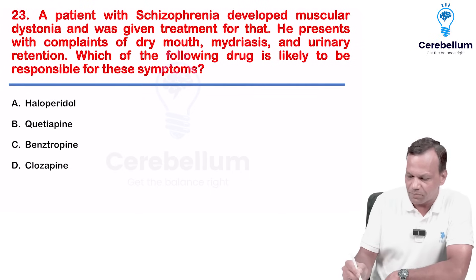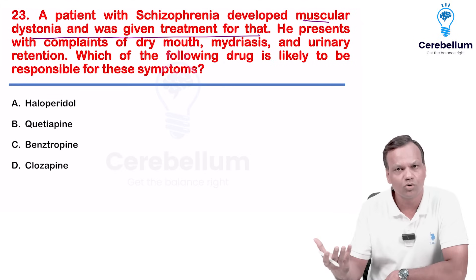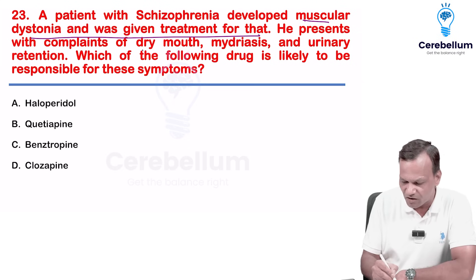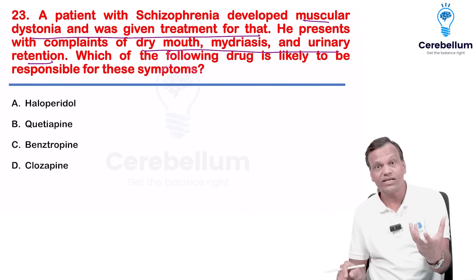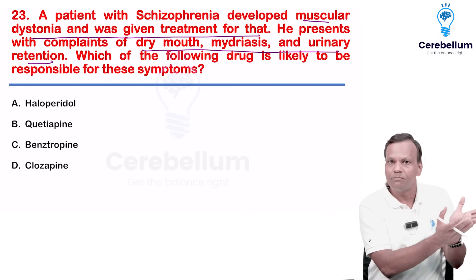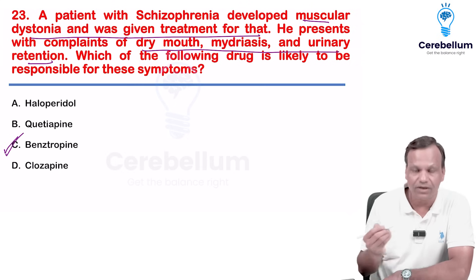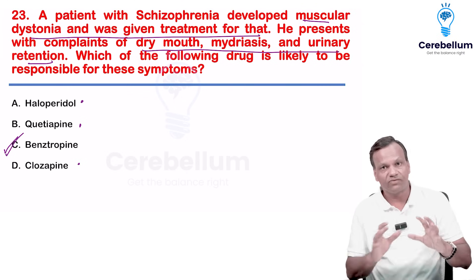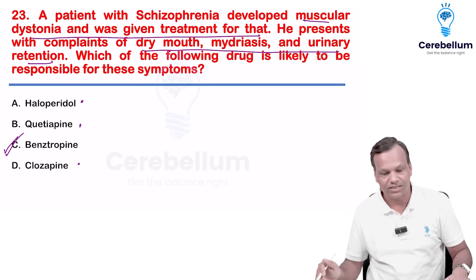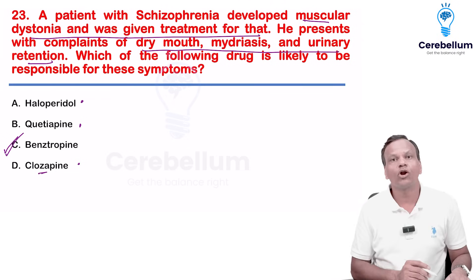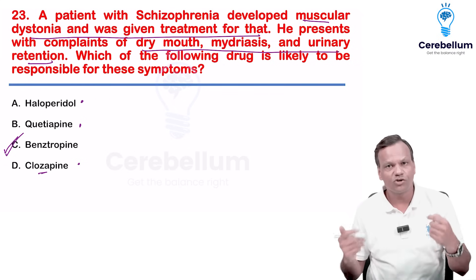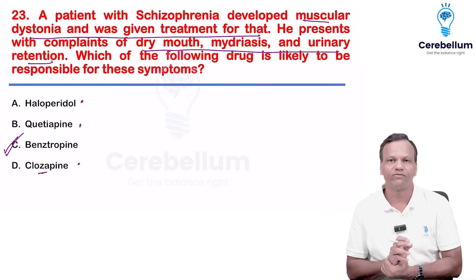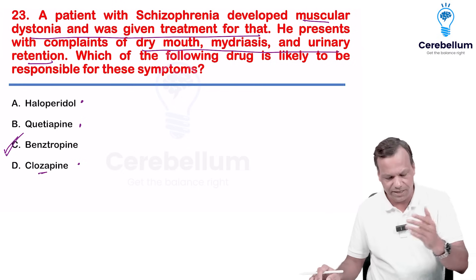A schizophrenic patient develops muscular dystonia. Treatment for dystonia is anticholinergic drugs like benztropine. The patient then presents with dry mouth, mydriasis, and urinary retention — these are anticholinergic side effects caused by benztropine. Haloperidol, quetiapine, and clozapine are antipsychotics for schizophrenia, not for treating dystonia. Clozapine is reserved for drug-resistant schizophrenia and does have anticholinergic properties, but since symptoms started after the dystonia treatment, the answer is benztropine.